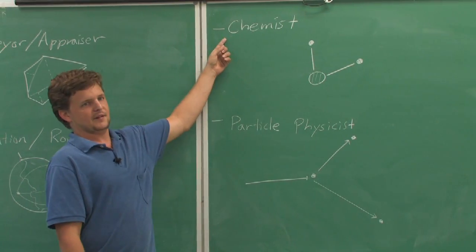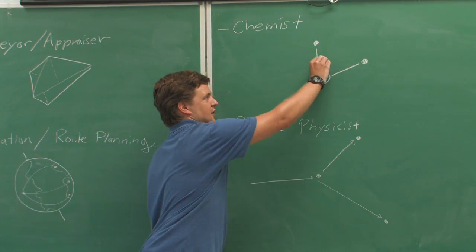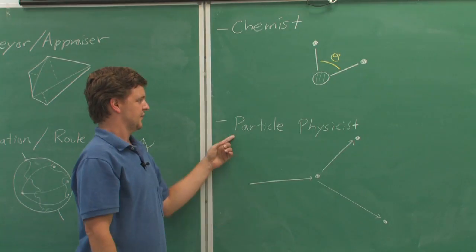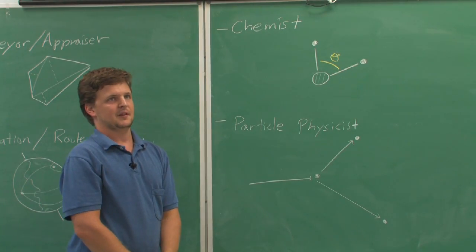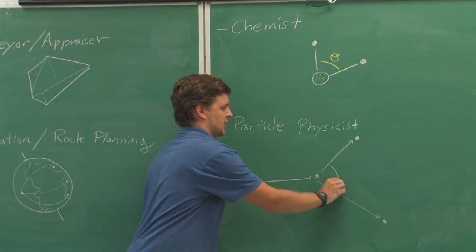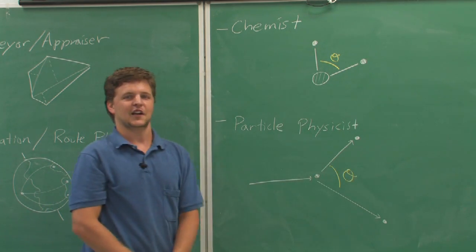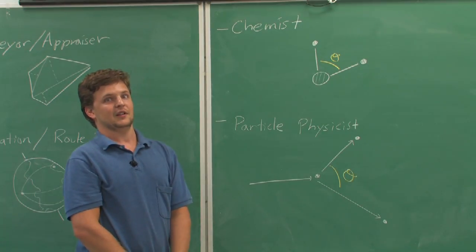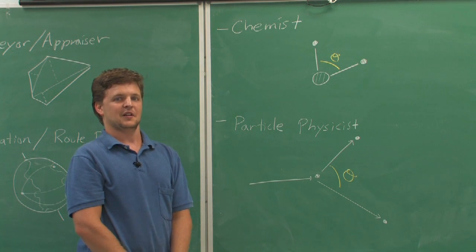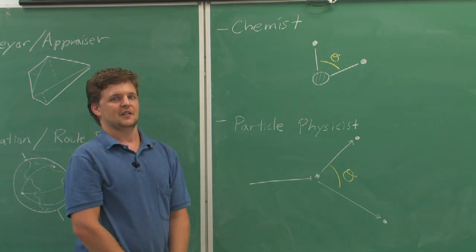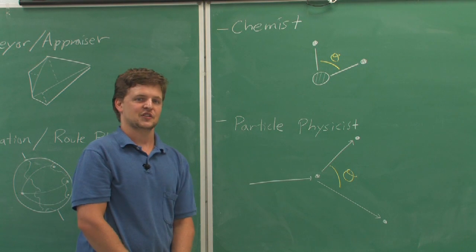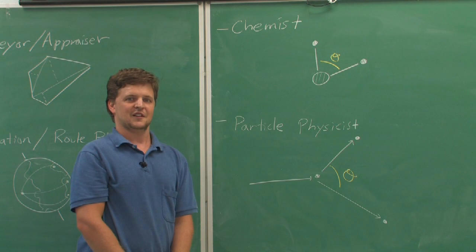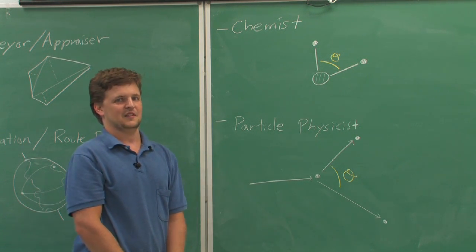A chemist may need to be able to calculate and use bond angles in molecules. A particle physicist may need to be able to calculate and use scattering angles when considering particle collisions. And a lot of other areas of science are going to be interested in angles. A nuclear physicist has to calculate cross sections, how large the nucleus of an atom might appear to a neutron heading its way at a certain angle.